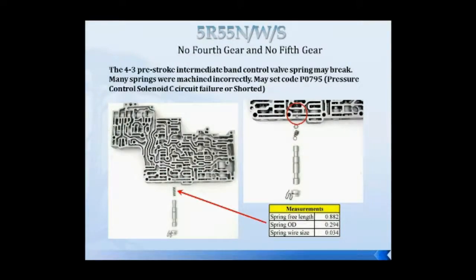For N, W, and S transmissions with no fourth or fifth gear, that could be caused by a broken intermediate band control valve spring. When you see a broken spring, it's typically not caused by a failure inside the transmission — 99.9% of the time it's due to improper stress-relieving of the spring at the manufacturer level. Don't look for other causes. You may find this spring available in the aftermarket; if not, the handout provides spring pre-load specs and wire diameters so you can source a replacement.